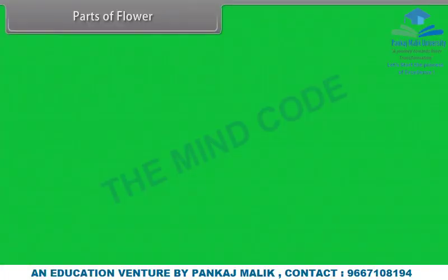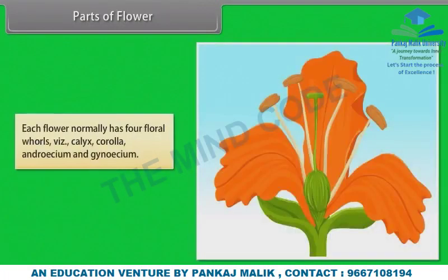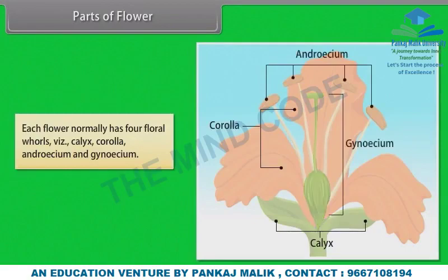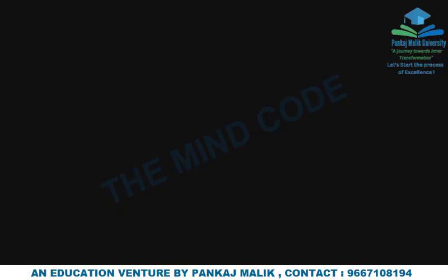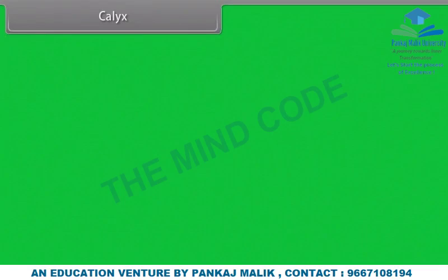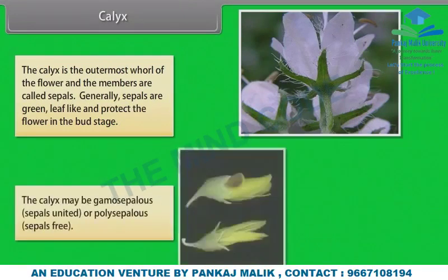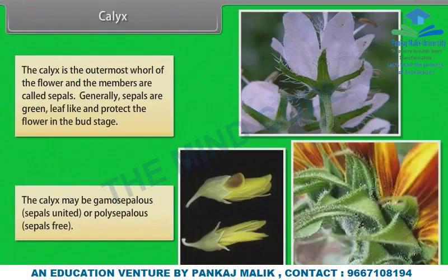Each flower normally has four floral whorls: calyx, corolla, androsium and gynosium. The calyx is the outermost whorl of the flower and the members are called sepals. Generally sepals are green, leaf-like and protect the flower in the bud stage. The calyx may be gamosepalous (sepals united) or polysepalous (sepals free).